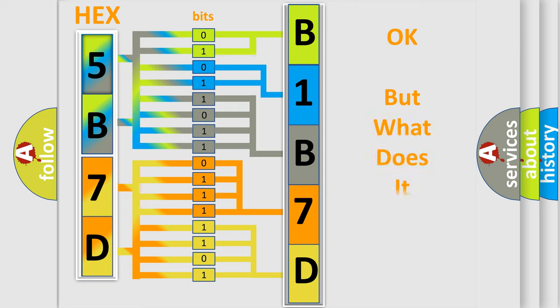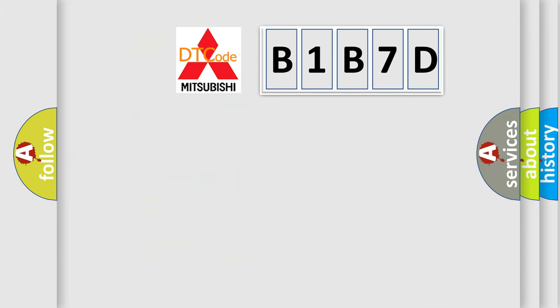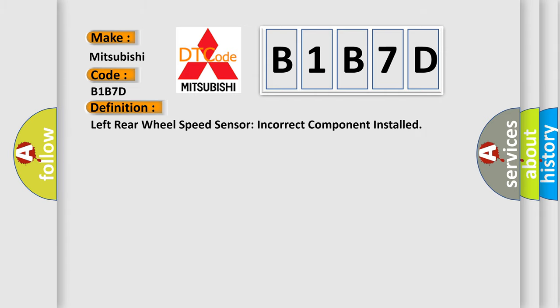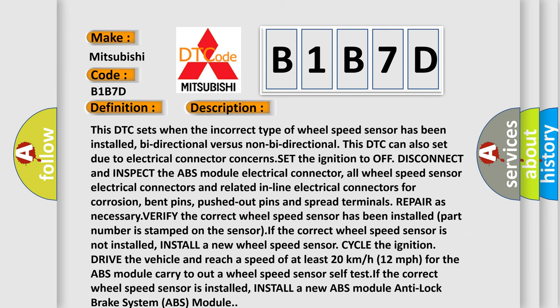We now know in what way the diagnostic tool translates the received information into a more comprehensible format. The number itself does not make sense to us if we cannot assign information about what it actually expresses. So, what does the diagnostic trouble code B1B7D interpret specifically? For Mitsubishi vehicles, the basic definition is: left rear wheel speed sensor — incorrect component installed. Here is a short description of this DTC code.